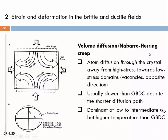Volume diffusion, Nabarro-Herring creep, therefore requires certain minimum temperatures that are specific for each mineral species — minimum temperatures that allow atom diffusion. Vacancies would always go from low-stress to high-stress sites, whereas atoms would move in the opposite direction, and this eventually changes the shape of the crystal, as illustrated by the strain ellipse compared to the unstrained state. Again, this is an isochoric deformation process in which no volume change takes place.